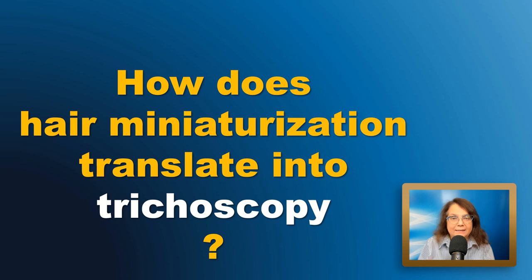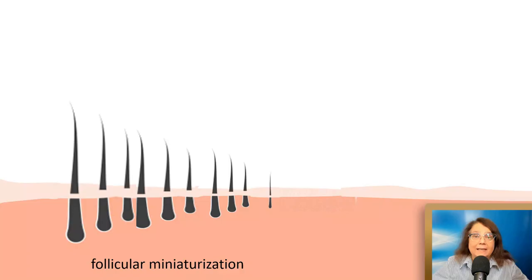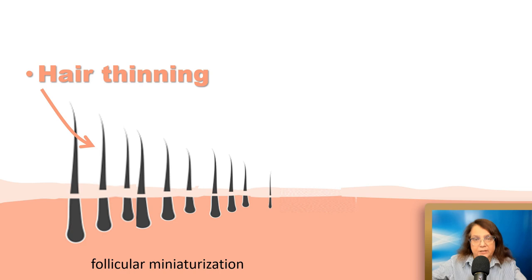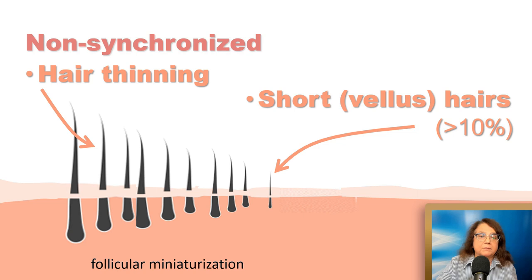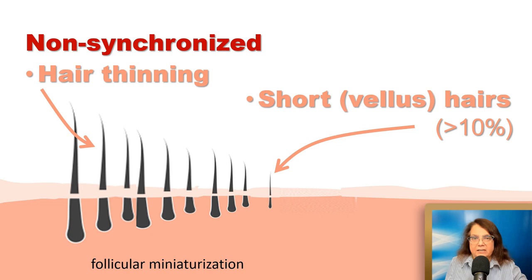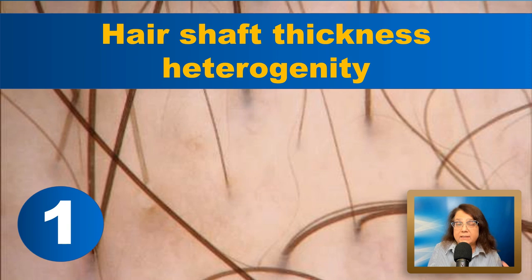Let's go back for a moment to hair miniaturization. How does it translate to trichoscopy? There are three things you will see. First, hair thinning — hairs are thinner compared to normal. Second, with ongoing thinning, the follicle eventually produces a vellus hair. And third, most importantly, unlike other diseases with hair thinning, here the hair thinning is not synchronized — every hair follicle goes through miniaturization at its own speed and its own time.